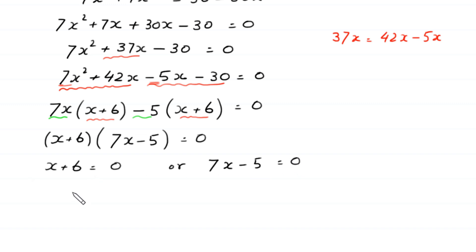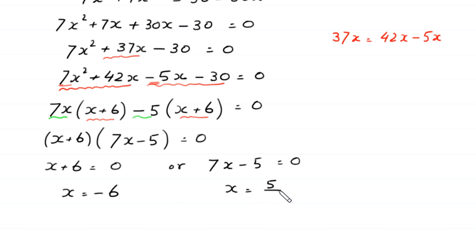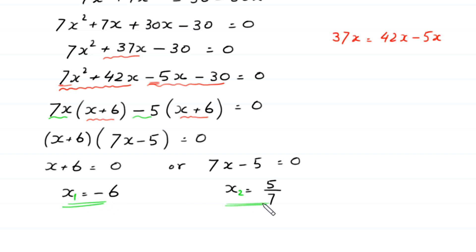From here, either x plus 6 equals 0, giving x equals negative 6, or 7x minus 5 equals 0, giving x equals 5 over 7. So we get two values of x: x1 equals negative 6 and x2 equals 5 over 7.